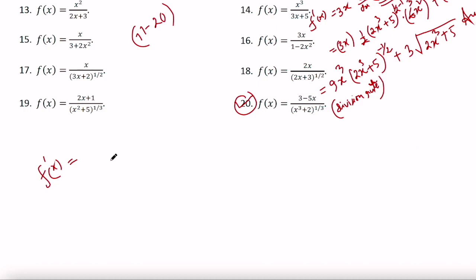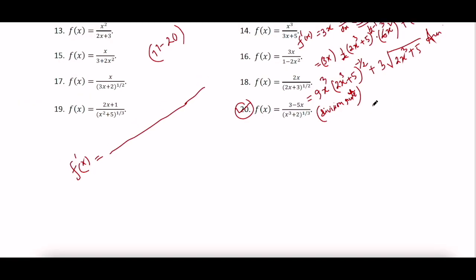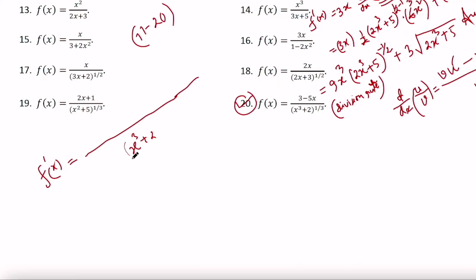Using the quotient rule: the derivative of u divided by v equals v squared times (v times u prime minus u times v prime). Here v is (x cubed plus 2) to the power 1 by 3, so v squared will be (x cubed plus 2) to the power 2 by 3. We start from v times (x cubed plus 2) to the 1 by 3 into the derivative of (3 minus 5x).